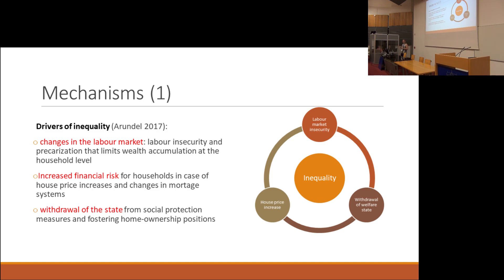What can be my mitigation strategy? The context around it includes what's happening with the state — will it withdraw from social protection measures? In the Hungarian context nowadays, if I lose my job I will have 90 days of unemployment benefits. What can you do in 90 days? That's enough just to pay two bills. So what pushes people towards low-cost home ownership or insecure home ownership as well?